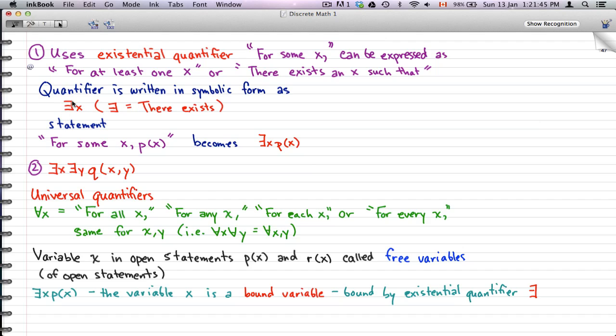So the statement 'for some x, P(x)' becomes ∃xP(x), because we know in this universe there is some x that makes P(x) true. Now, the second one we were talking about...